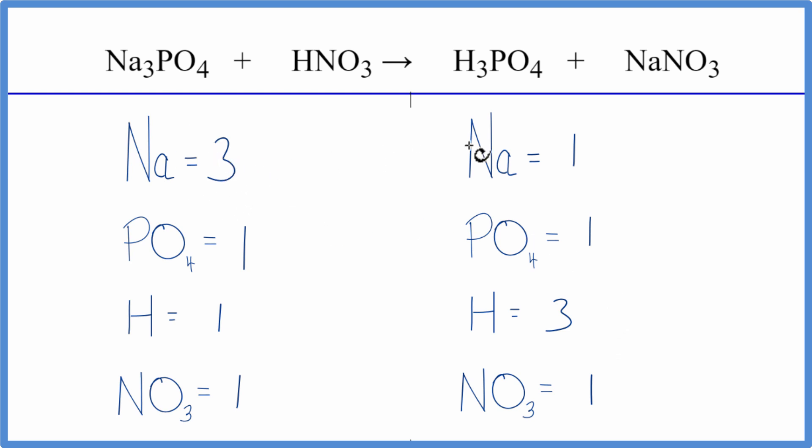So we have three sodiums here and here. Let's put a coefficient of three in front of the sodium nitrate, one times three. So that gives us three sodiums. Those are balanced. And then we have the nitrate, the NO3. We have one of these times three, and those are balanced.